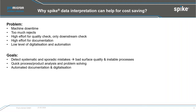Our goal — and your goal — is to detect systematic and sporadic mistakes in production in order to eliminate bad surface quality and make unstable processes more stable. We need quick process and product analysis, problem-solving solutions, automated documentation, and to follow the trend of digitalization.